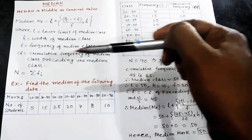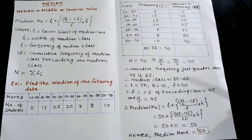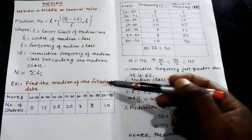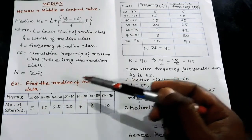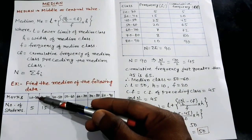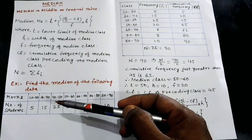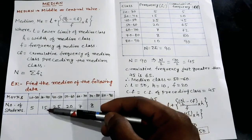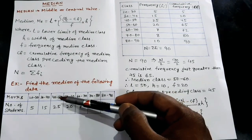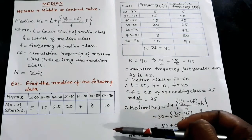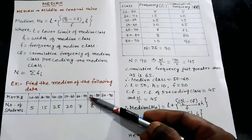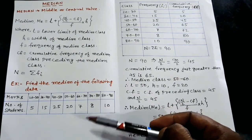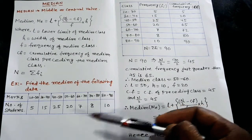N equals sigma fi. To understand median in detail, let us take an example. Find the median of the following data: Marks 20–30, students 5; marks 30–40, students 15; marks 40–50, students 25; marks 50–60, students 20; marks 60–70, students 7; marks 70–80, students 8.